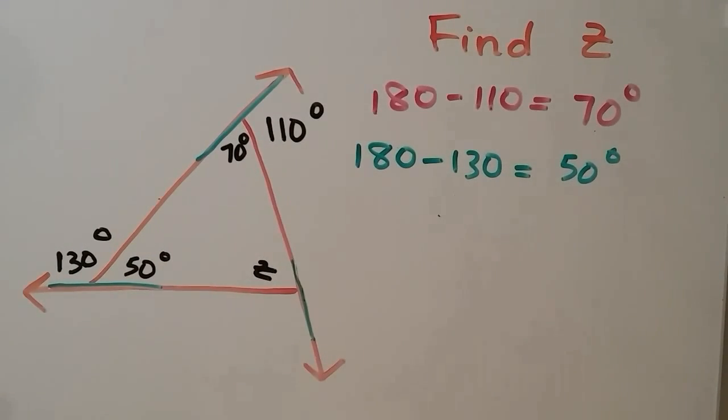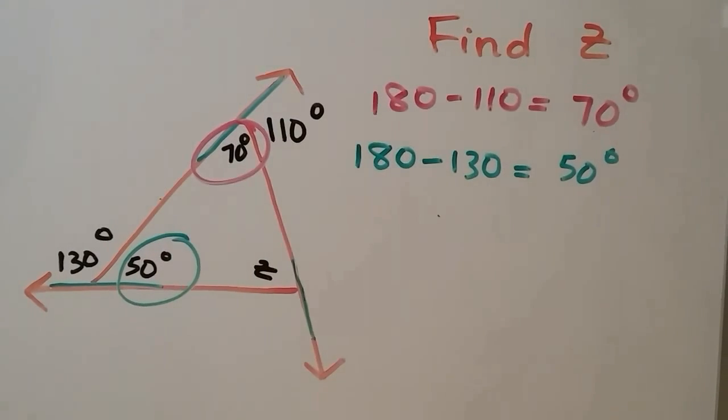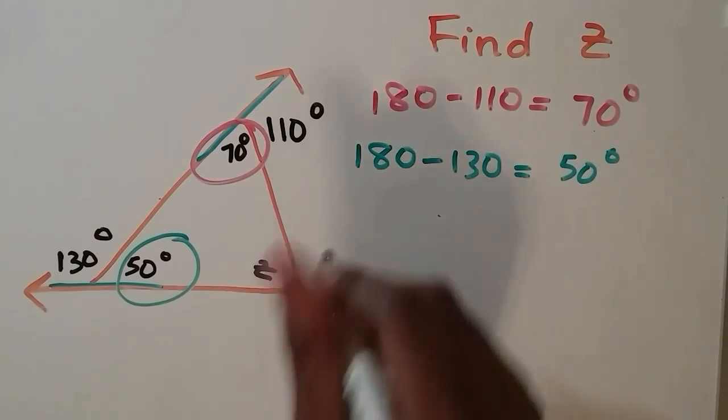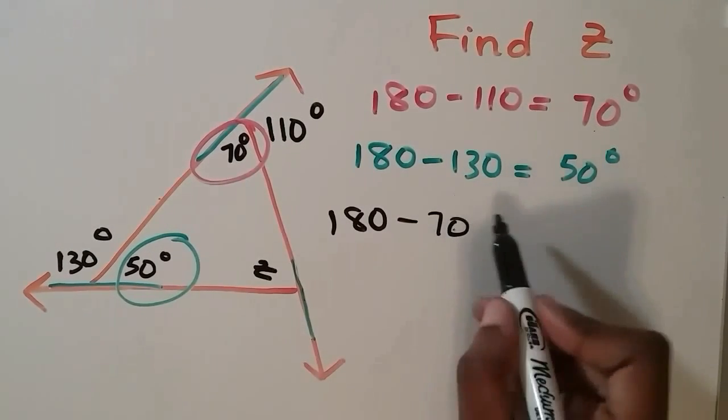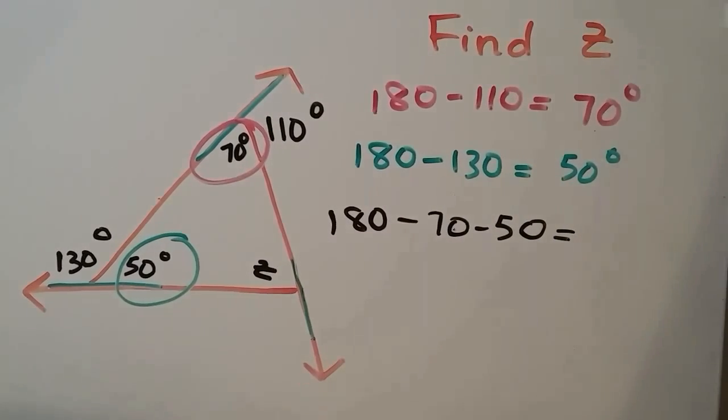Now that we know two of our interior angles, we can subtract those from 180 to get our third interior angle. 180 minus 70 minus 50 is equal to 60. So we know that z is equal to 60 degrees.